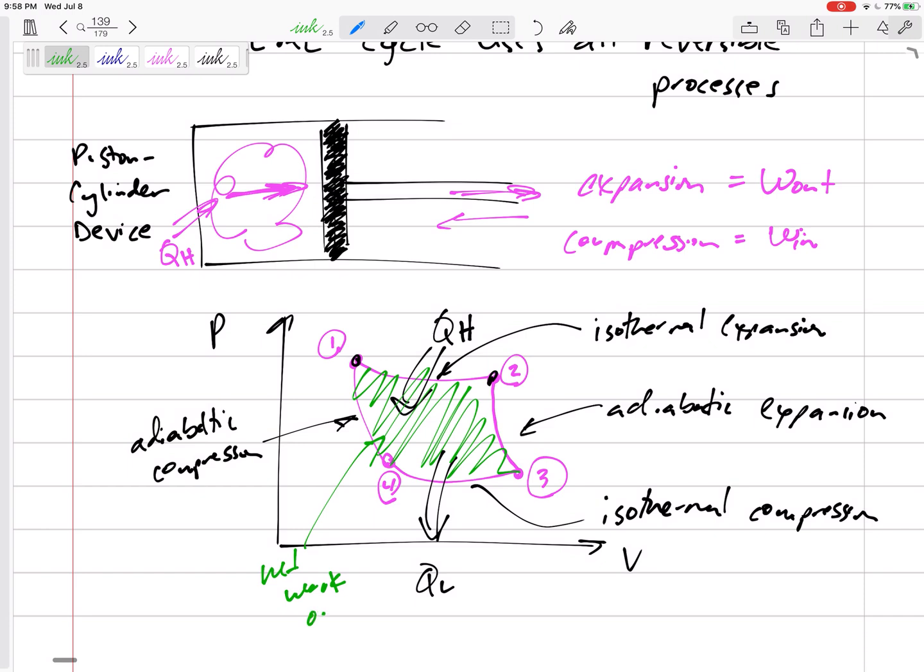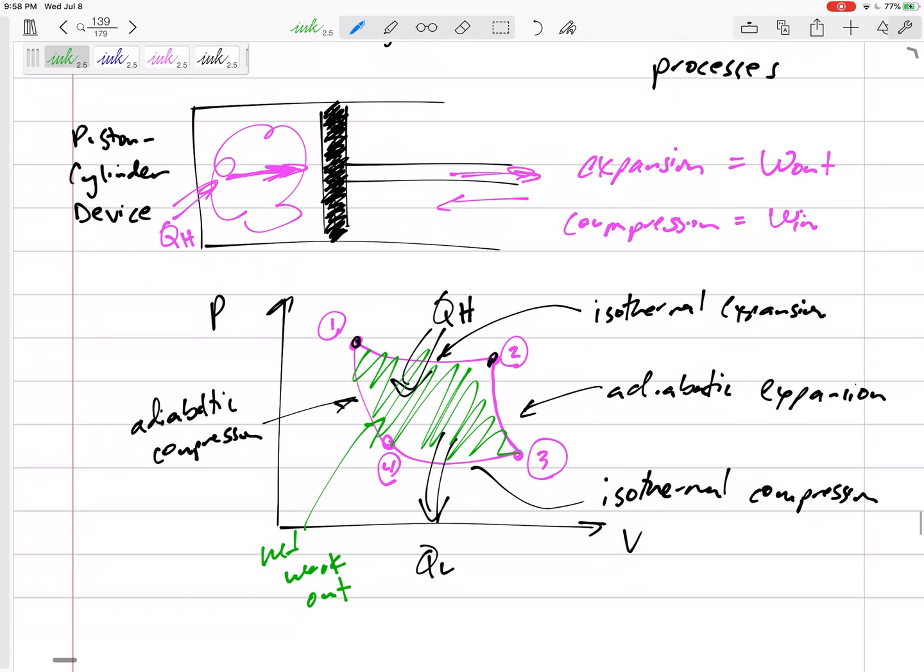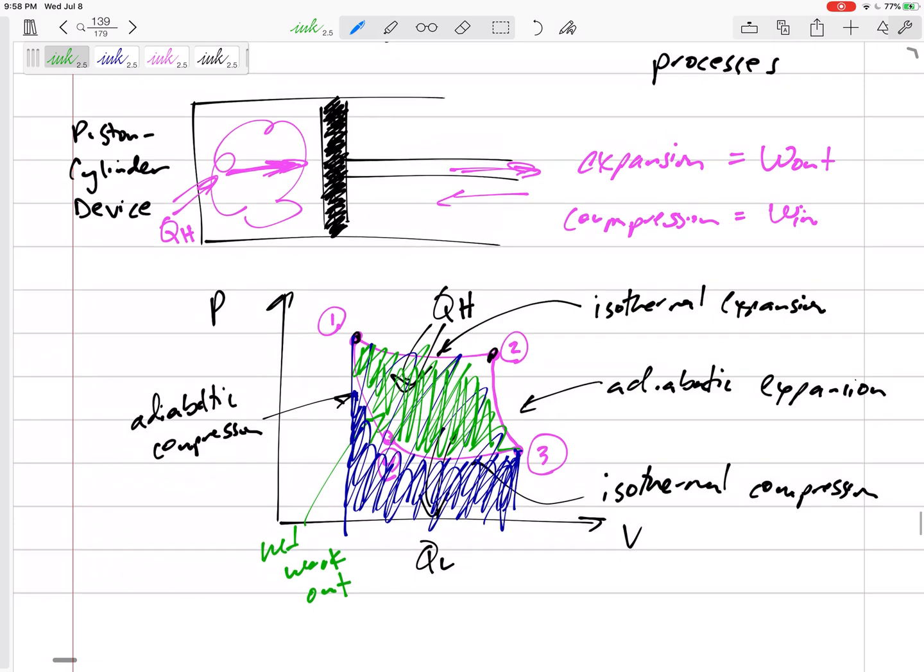This is work out because expansion is work out, compression is work in. So this right here is the work out. This from 3 to 4 to 1, this area under here is the work in. And so this green area is the net work that we can get out of our heat engine. This is for a heat engine.